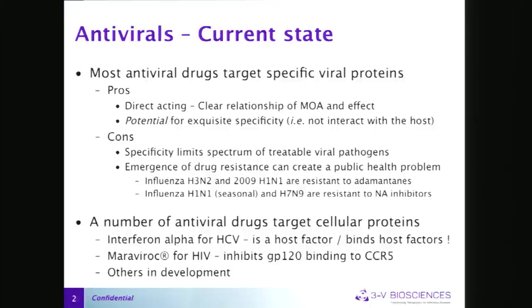If you look at the influenza H3N2s and the 2009 H1N1 derivatives circulating today, they are resistant to the adamantanes — the bread and butter of influenza drugs over the last several decades. The H1N1 seasonal strains just before the 2009 pandemic and the current H7N9 strain are resistant to the neuraminidase inhibitors. So you're getting widespread resistance within the two classes of drugs, and before long they may adapt resistance to both classes.